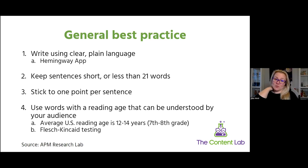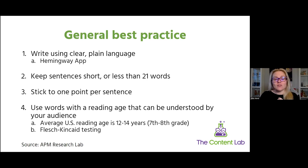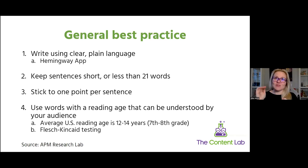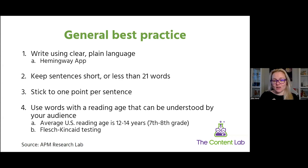Keep sentences short — less than 21 words — one point per sentence. For reading age, the average US reading age is between seventh and eighth grade, so ages 12 to 14. You can use the Hemingway app to assess the reading level you're writing at — it's free and also converts passive voice to active voice. I've found working with government bodies and health departments there's a habit of making things more formal, but keep it simple. Nobody should need a dictionary and a thesaurus to understand your homepage.